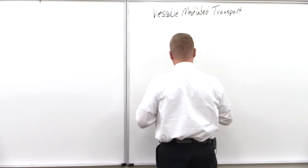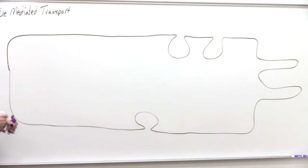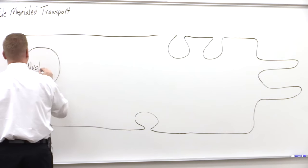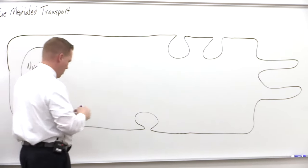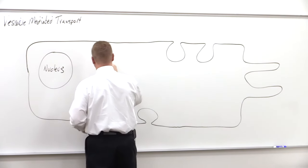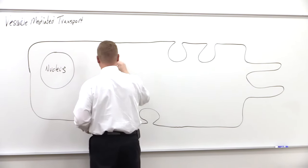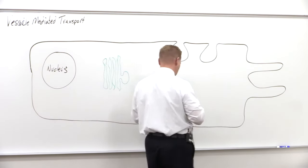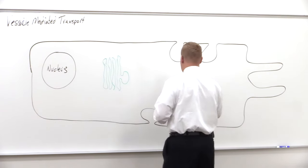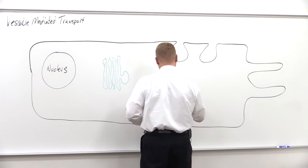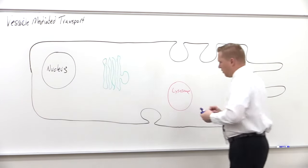Let's draw a large cell. Here is a basic model of the cell, and we're going to give it a few organelles just for orientation. Here's the nucleus on the side. We'll also draw a Golgi apparatus and a lysosome. Those are the main organelles we're going to involve.